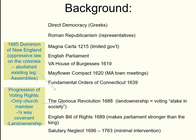What we have here is a series of how we're showing democratic ideas. We have our old ideas from the Greeks of direct democracy — that's where every single person votes for every single thing. Then Roman republicanism, which means representative government. Like the United States, we are a republic, and that means we have representatives.